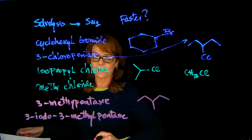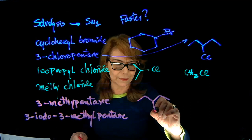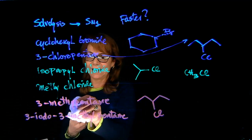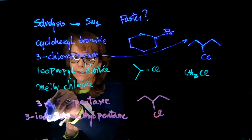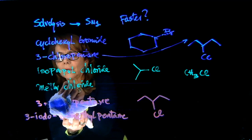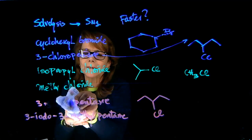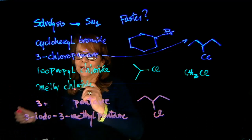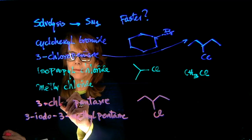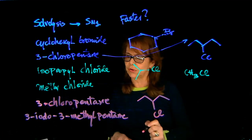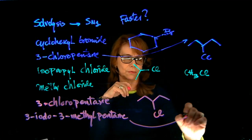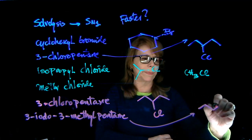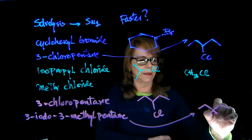Actually, that's not 3-methylpentane — it's 3-chloropentane, because otherwise there would be no leaving group. So I need to correct that. The corrected name is 3-chloropentane. And finally, 3-iodo-3-methylpentane: a pentane chain with a methyl group and an iodo substituent both at carbon 3.